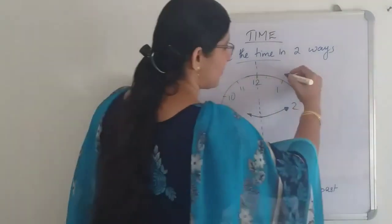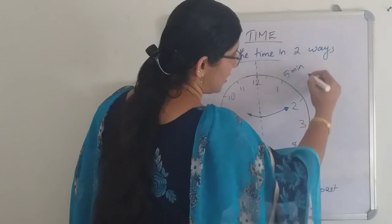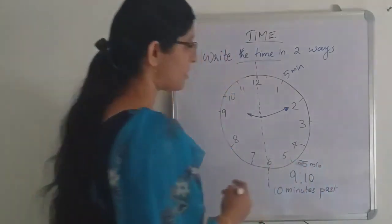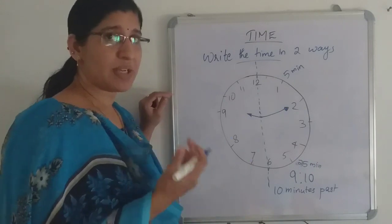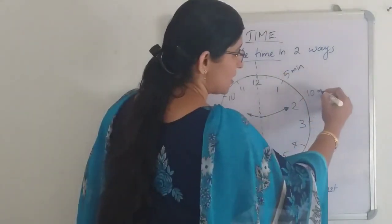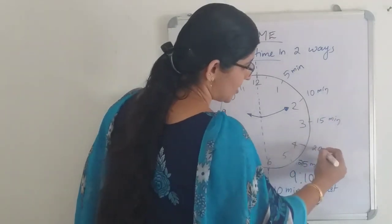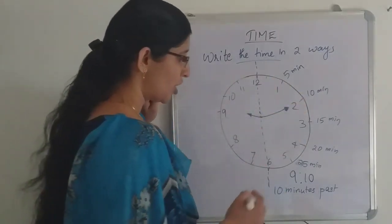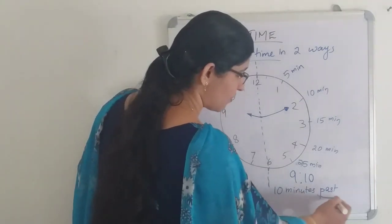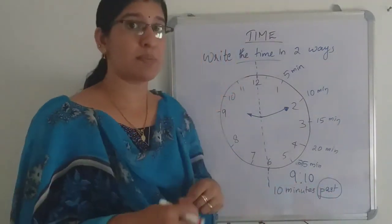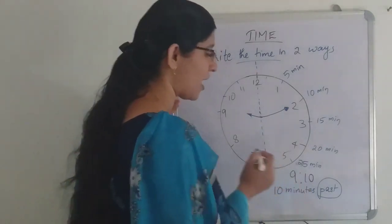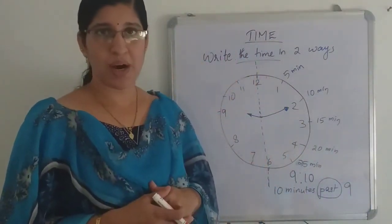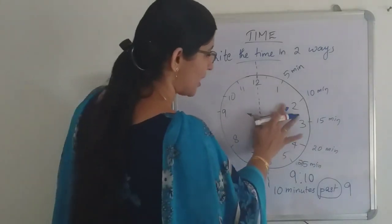When the minute hand is in between five minutes to twenty-five minutes — that is five, ten, fifteen, twenty, twenty-five minutes — and it is in the first half, you write the minute first, then the word 'past,' then the hour. So the time nine ten is written as '10 minutes past 9.'